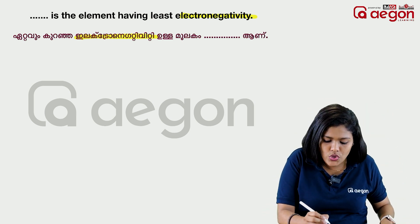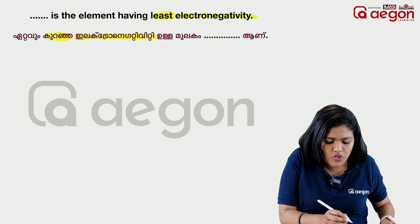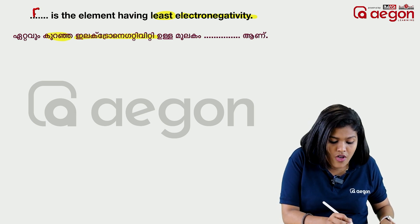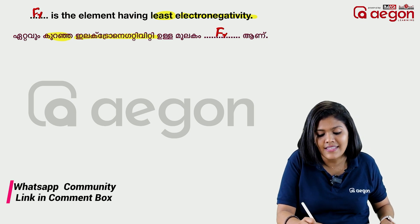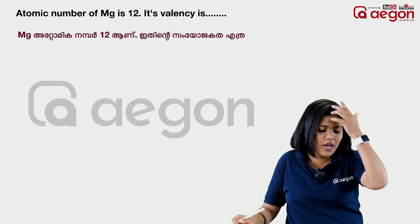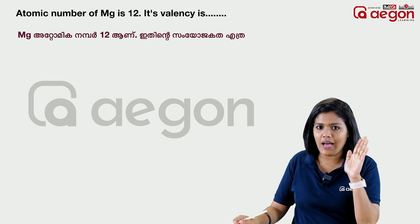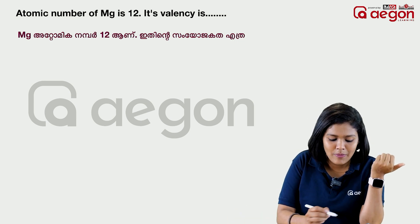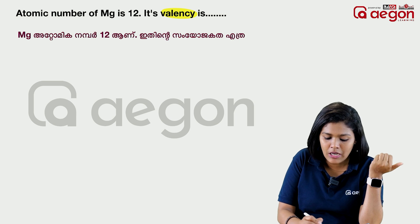The element having the least electronegativity — Fluorine has the highest electronegativity. Now, this is the symbol for Francium, which has the least electronegativity. The atomic number of Magnesium is 12. We are going to find its valence.